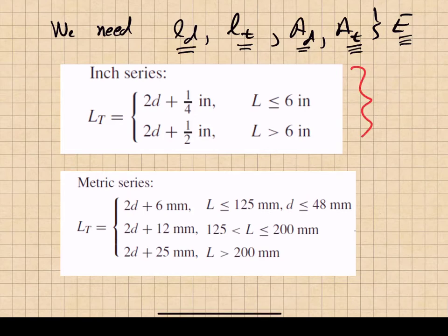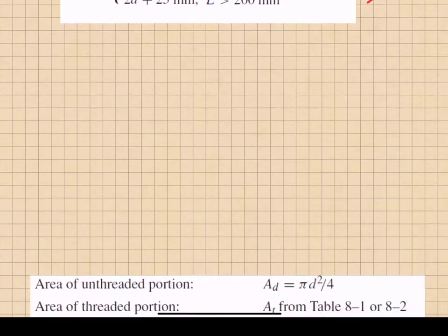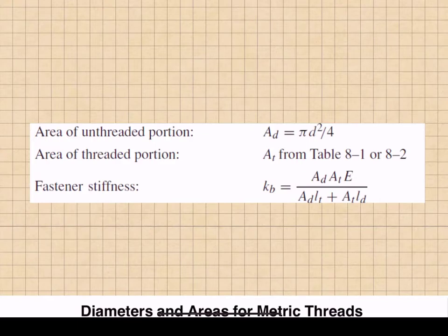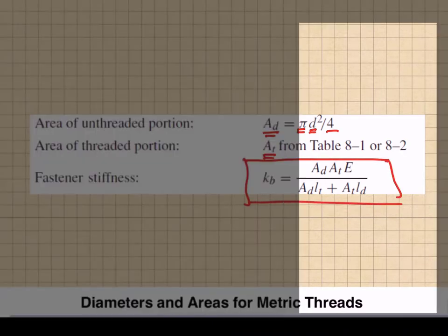In English units, if the bolt is less than six inches long, the threaded length is twice the diameter plus a quarter inch. If greater than six inches, it's twice the diameter plus a half inch. For metric bolts, corresponding equations apply. The area of the unthreaded portion is pi times the nominal diameter squared divided by four. The threaded area is found from tables — in Shigley's, tables 8.1 and 8.2 for metric and English series bolts respectively. The fastener stiffness uses the equation we just derived.